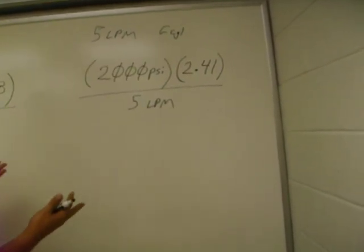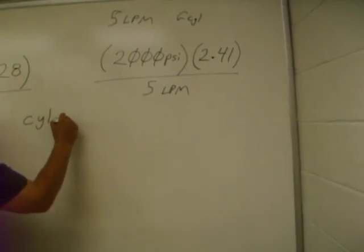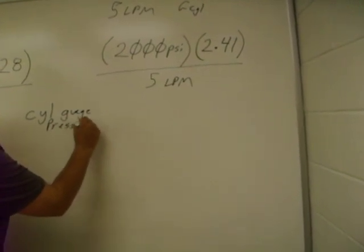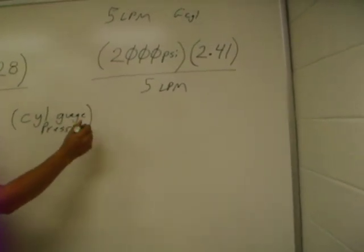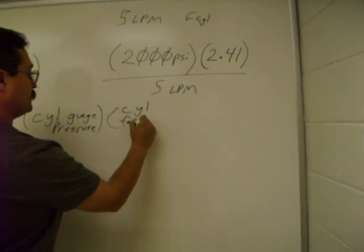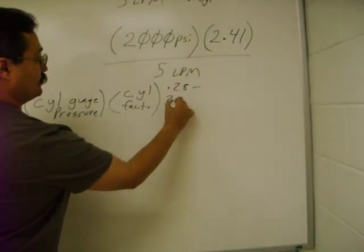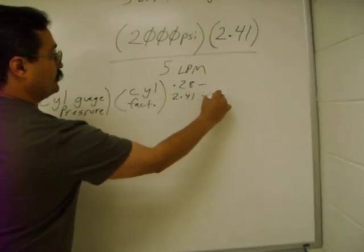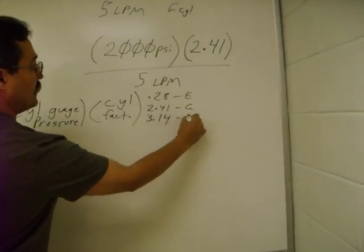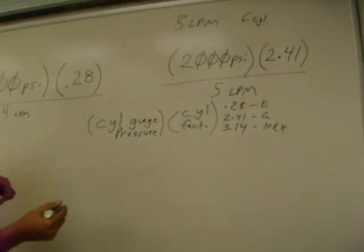The equation's always the cylinder gauge pressure times a cylinder factor, which is either 0.28 for an E-cylinder, 2.41 for a G-cylinder, or 3.14 for an H-N-K cylinder. Yes, these values are all for oxygen and air-filled tanks.